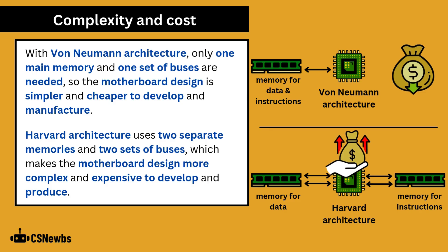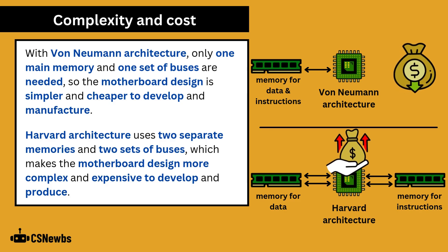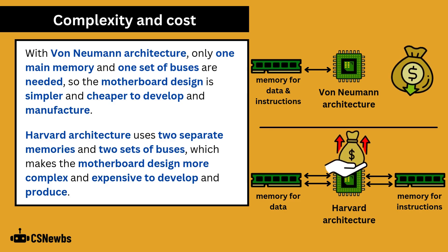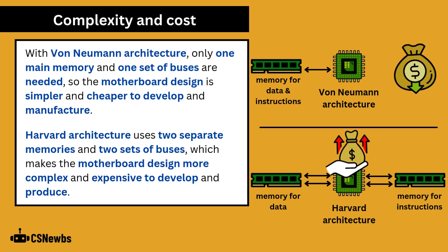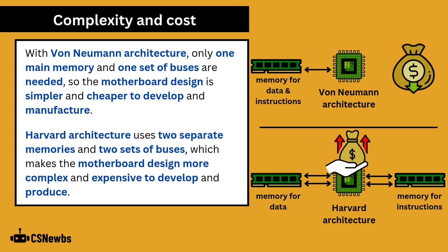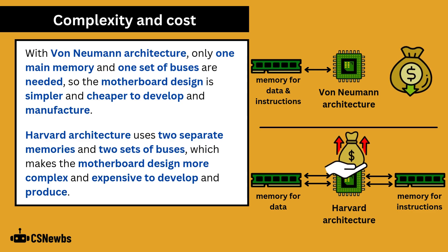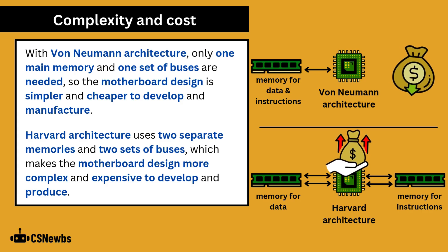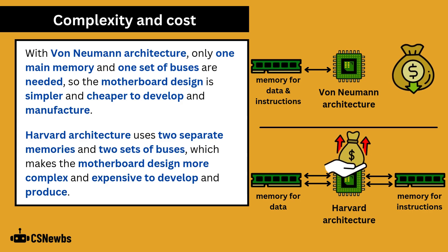With von Neumann architecture, only one main memory and one set of buses are needed, so the motherboard design is simpler and cheaper to develop and manufacture. Harvard architecture uses two separate memories and two sets of buses, which makes the motherboard design more complex and expensive to develop and produce.